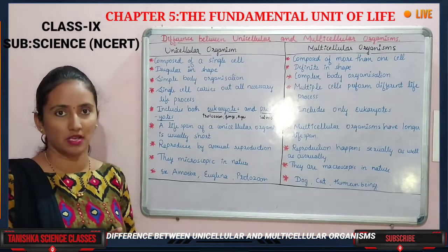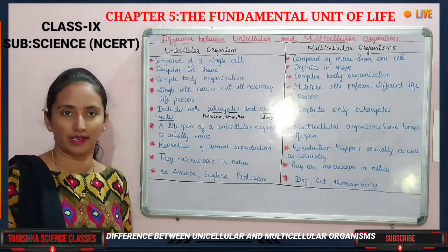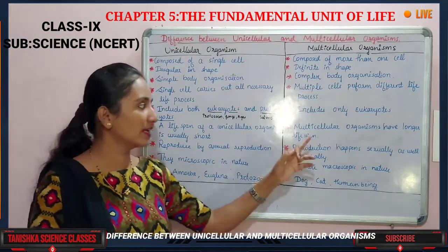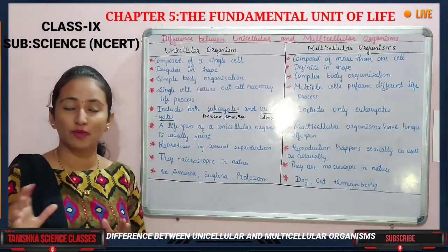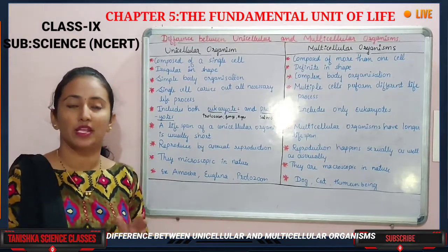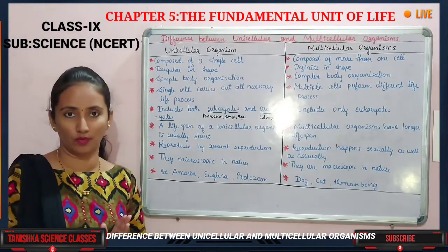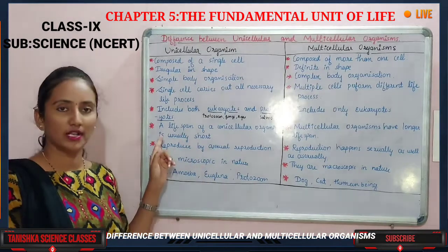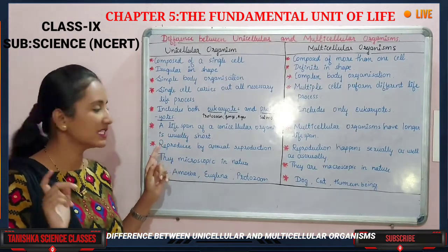The sixth difference is lifespan. Unicellular organisms have a very short lifespan — they die in a very short time. Multicellular organisms, on the other hand, live for a longer time and have a much longer lifespan.